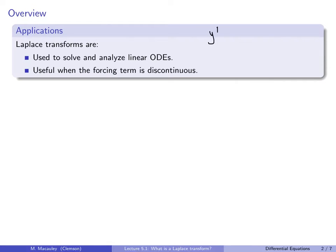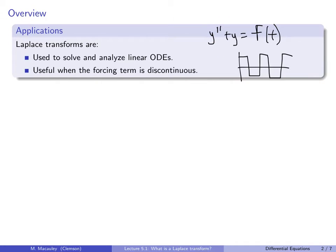For example, let's suppose we have an equation y double prime — simple harmonic motion — with a forcing term f(t). Maybe this is an electrical system where the forcing term is a square wave. If this is discontinuous, we can't use our standard calculus tools to solve the equation. But there really should be a solution — this is a mass-spring system with a discontinuous impulse term, and that solution y(t) will exist, probably not continuous, but we should be able to find it. That's what the Laplace transform is going to be used to do.